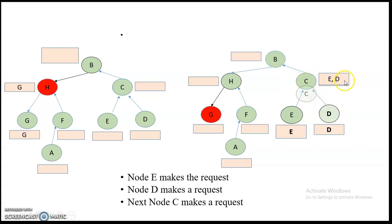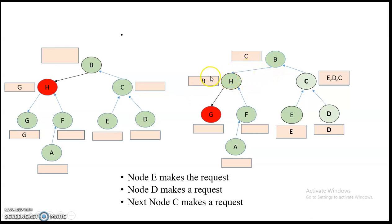Node C also makes a request for the critical section. C updates itself into its own queue, then sends the request to B, updating C into B's queue. B then sends the request to H, updating B into H's queue. H then sends the request to G and updates itself into G's queue, meaning when G returns the token, it will return it to H.